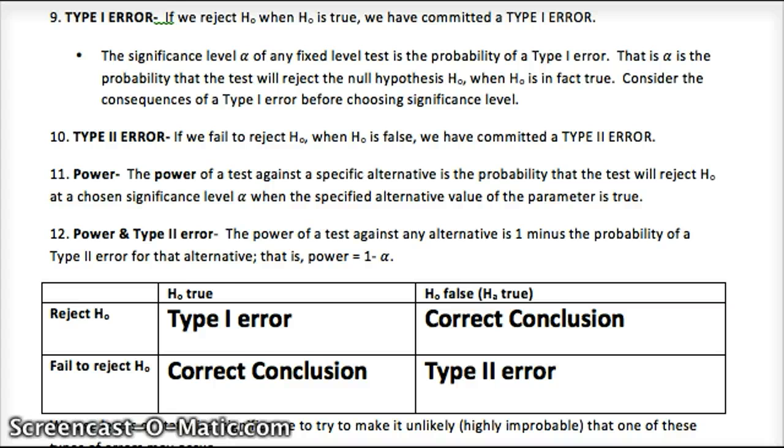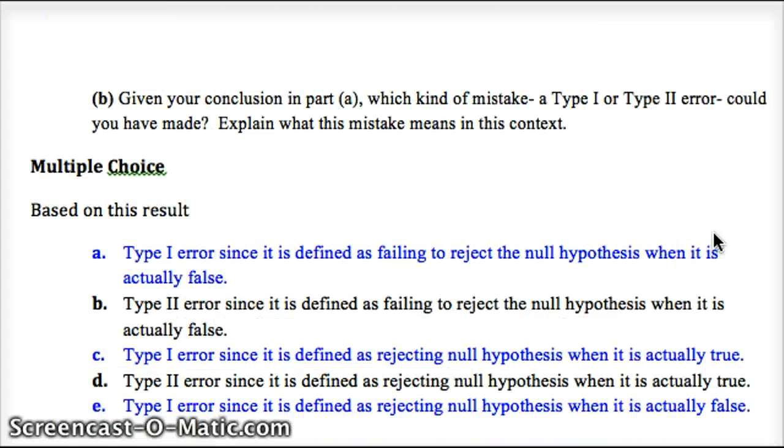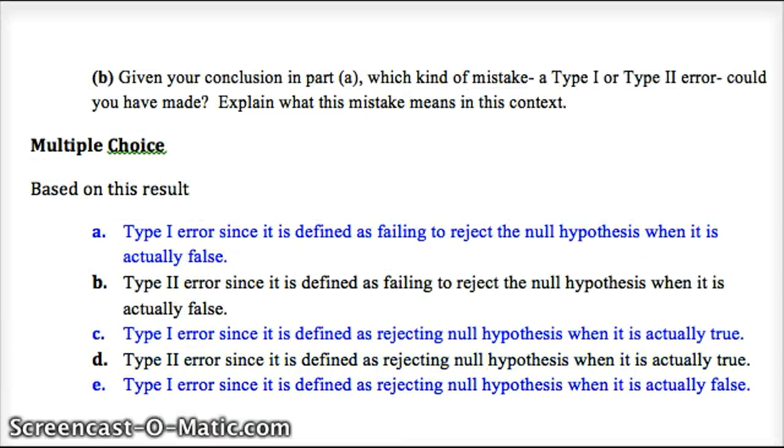So use this in order to determine what type of error we could have made. Pause now if you'd like to keep looking at it. So based on the result of the problem that I just walked you through, which one of these could we have made? Type 1 or type 2 and why? Feel free to go back on your outline or anything in your book or on the video. And then also comment on the relationship between a confidence interval and a significance test about a population mean as the free response.